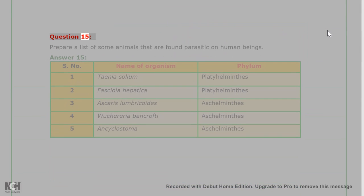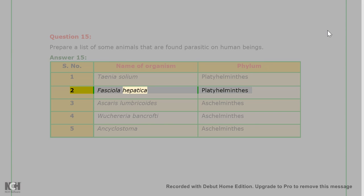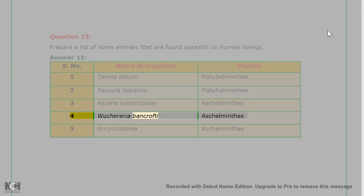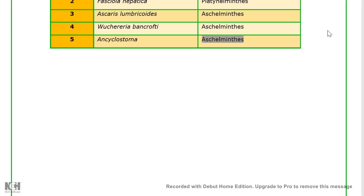Question 15: Prepare a list of some animals that are found parasitic on human beings. Answer 15: I. Taenia solium - Platyhelminthes; II. Fasciola hepatica - Platyhelminthes; III. Ascaris lumbricoides - Aschelminthes; IV. Wuchereria bancrofti - Aschelminthes; V. Ancylostoma - Aschelminthes.